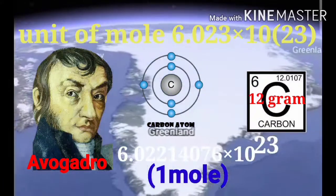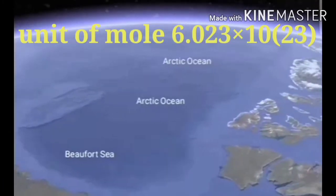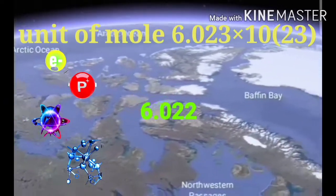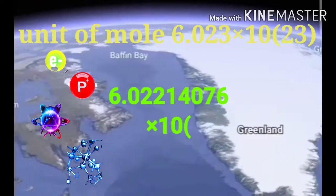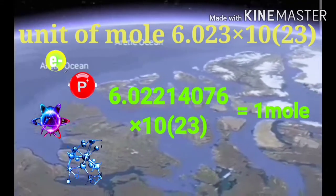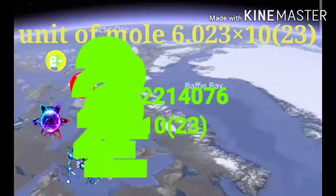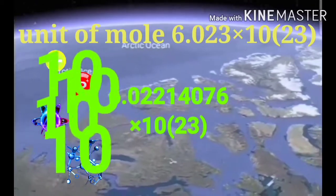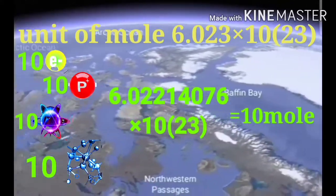This was defined as a mole. Anytime when the number of electrons, protons, atoms, or molecules becomes equal to 6.02214076 times 10 to the power 23, it is called 1 mole. And when the number of atoms or molecules doubles, it is called 2 moles. When their number becomes 10 times this, it is called 10 moles.